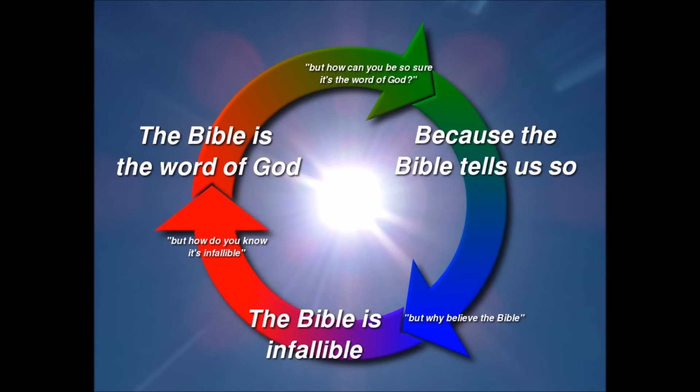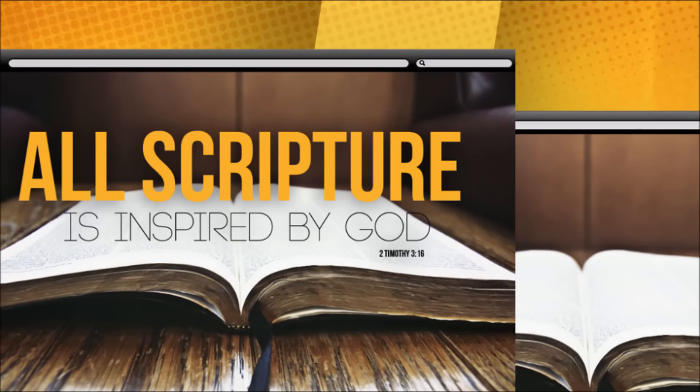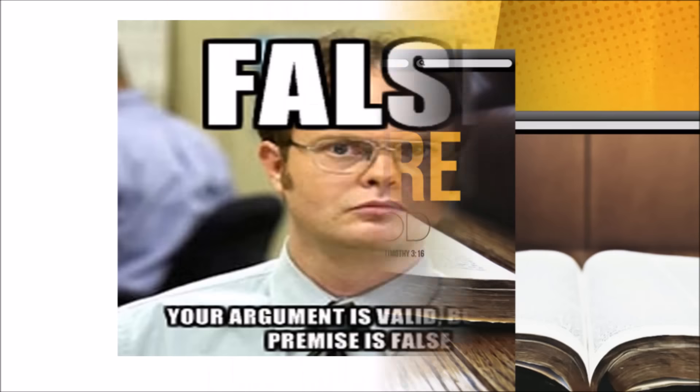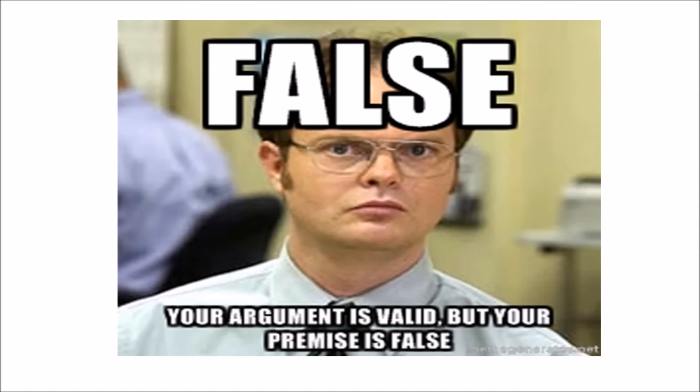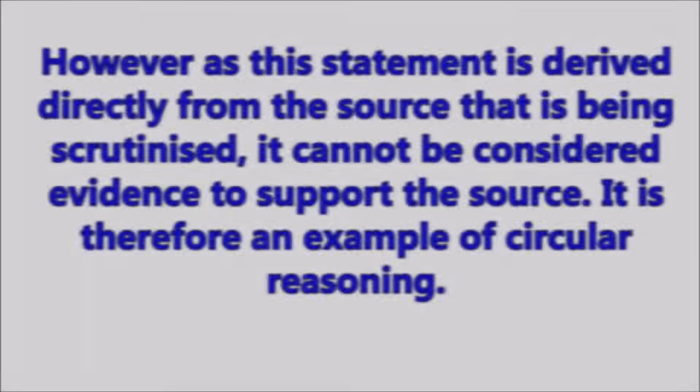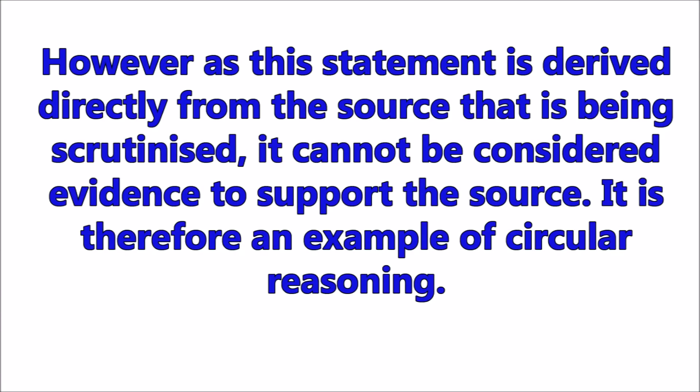This creates a paradoxical reasoning where the truth of the premise is determined by the conclusion and the conclusion is derived from the premise. Michael then references the scripture from Timothy. All scripture is inspired by God. If this statement could be drawn from an external source, the reasoning may be considered not fallacious, although the content could still be contested. However, as the statement is derived directly from the source being scrutinized, it cannot be considered evidence to support the source. It is therefore considered an example of circular reasoning.